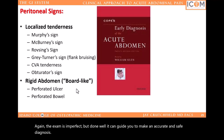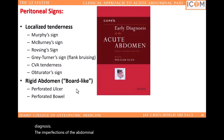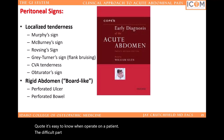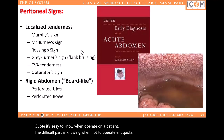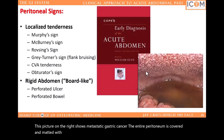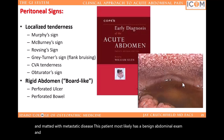The imperfections of the abdominal exam have created a saying all general surgeons know: 'It's easy to know when to operate on a patient. The difficult part is knowing when not to operate.' This picture on the right shows metastatic gastric cancer — the entire peritoneum is covered and matted with metastatic disease. This patient most likely has a benign abdominal exam, and they probably present bloated because they have intra-abdominal ascites floating inside the peritoneal cavity.